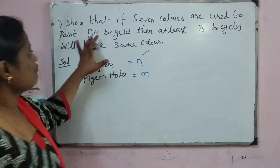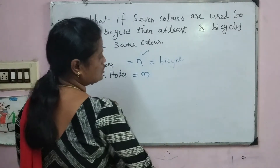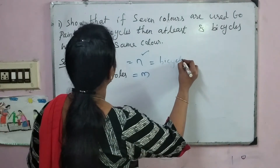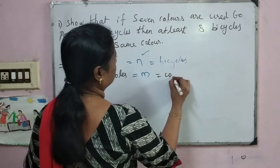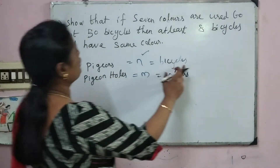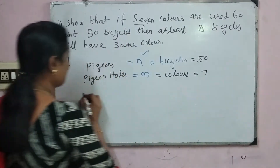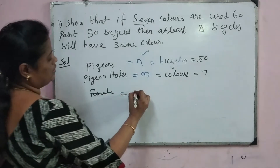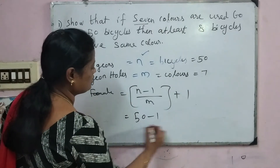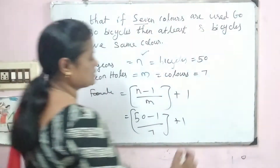In this problem, 7 colors are used to paint 50 bicycles. The pigeons are the bicycles and the holes are the colors. So N equals 50 and M equals 7. Applying the formula: N minus 1 divided by M, plus 1 gives us (50 minus 1) divided by 7, plus 1 — that is 49 divided by 7, plus 1 — which equals 8. So at least 8 bicycles will have the same color.